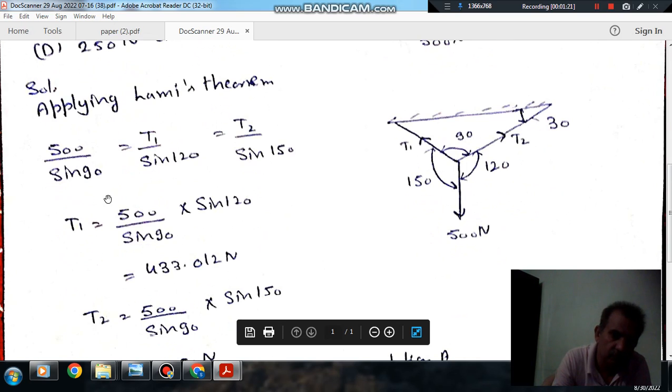From the first two, we can get T1: 500 into sin 120 by sin 90. So that is 433 N.